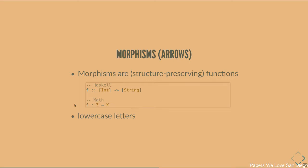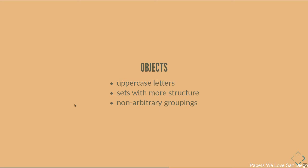The other class is objects, usually uppercase letters. You can think of an object in category theory kind of like a set, but with more structure. In set theory, a set is just an arbitrary grouping of some values. In category theory, an object has a little bit more structure — more emphasis on the relationships between the elements in the set. You might say elements of a list all have cons cells, and that might be an object in category theory — so it's non-arbitrary groupings. Objects are like really structured sets.